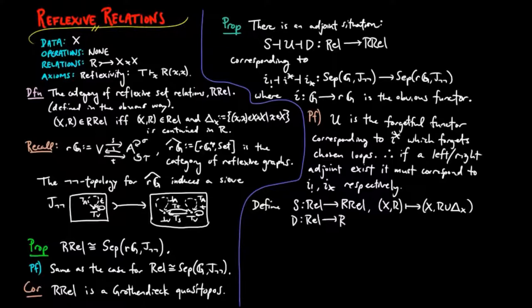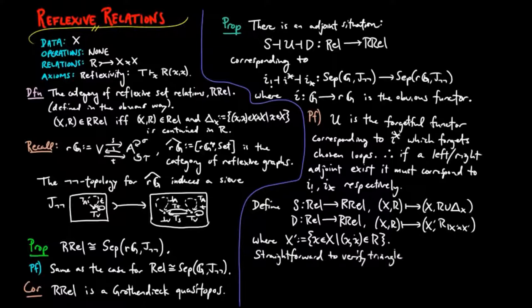and we define D by taking XR to X' R restricted to the binary product of X' where X' is the set of X in X such that the pair XX is in R. It is straightforward to verify the triangle identities.